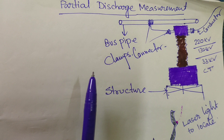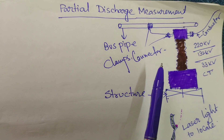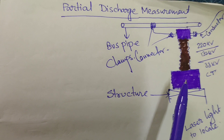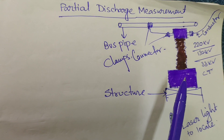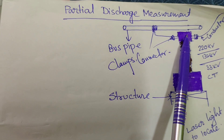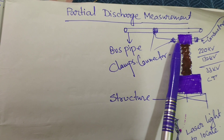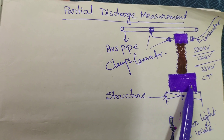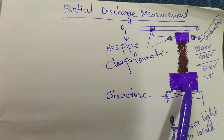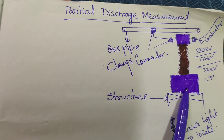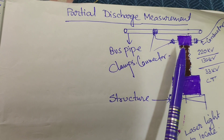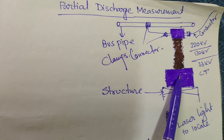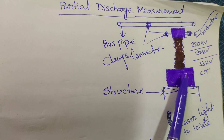For your clarity and easy understanding, I have drawn a CT. What is CT? CT is a current transformer. This is the primary of the CT, this is the head of the CT, and this is the secondary side of the CT. Inside it, the secondary coil is present for metering and protection purposes.